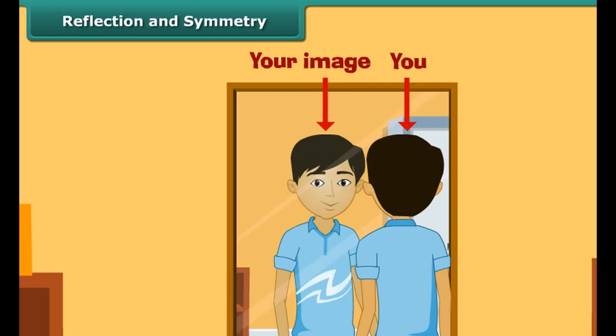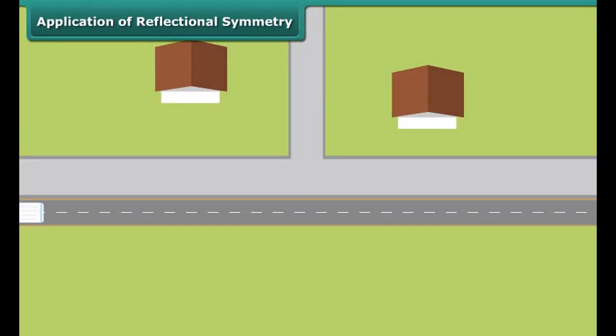Students, you must have noticed that when you see yourself in front of a mirror, you and your image are identical. The image is the reflection of the object in the same line. Notice that there is no change in the lengths and angles. However, in the image, the left portion of the object becomes right, whereas the right part of the object turns left part in the image.